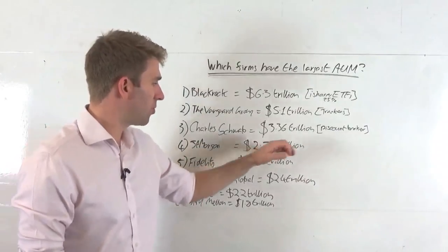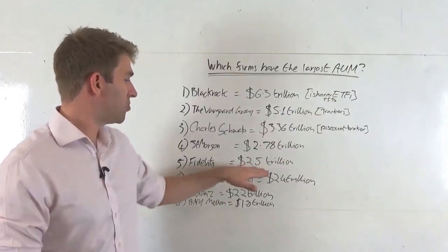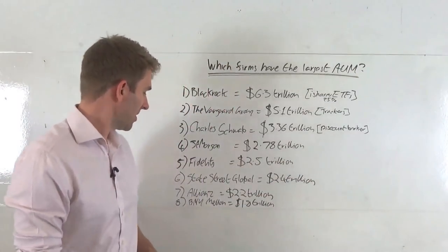JP Morgan, $2.78 trillion. Again, pretty decent number. We all know JP Morgan. Fidelity, $2.5 trillion. Pretty decent number there too.